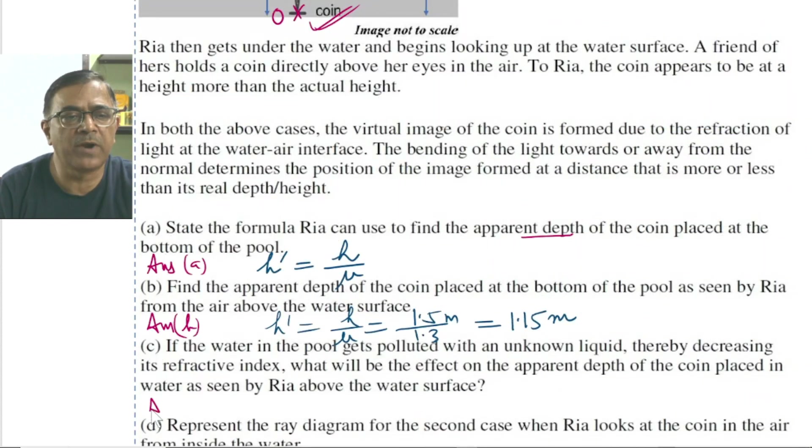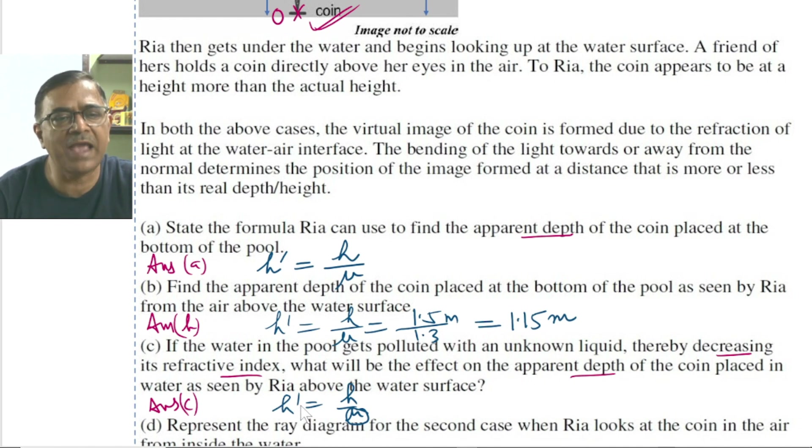Now answer part C. Water has been polluted which decreases the refractive index of the water, and we are supposed to tell the effect on the apparent depth. Now you see the apparent depth is given by the expression, you already know h' is equal to h by mu. Now mu has decreased, so automatically we expect the value of h', the apparent depth, should increase.